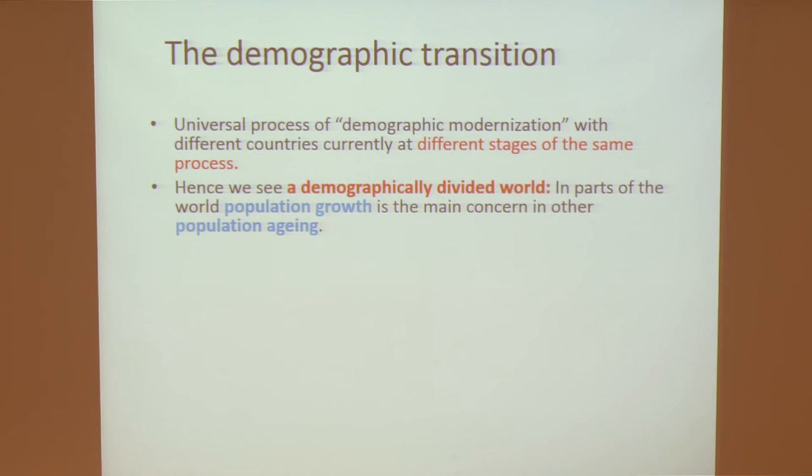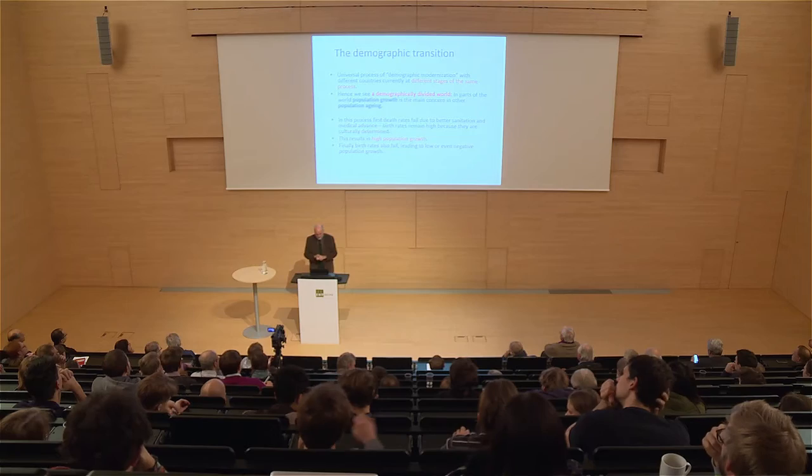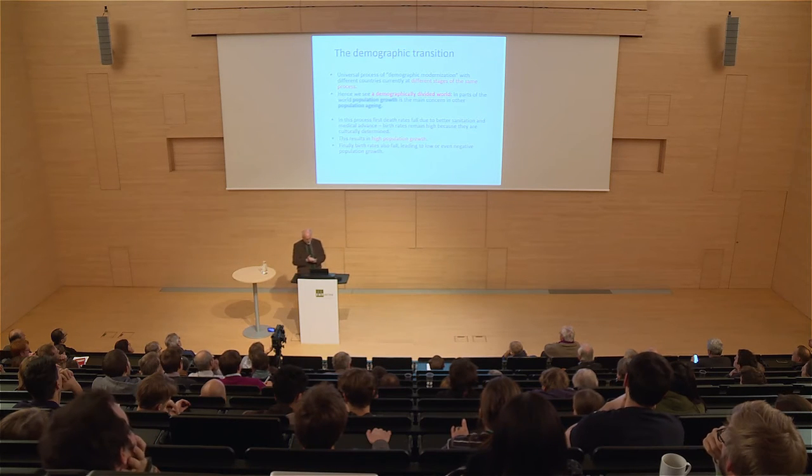This really confuses many commentators — in parts of the world, population growth is the main concern, particularly in Africa, whereas in others, particularly in Europe and East Asia, Japan being a good example, population aging is a big concern. Generally, it is first that the death rates fall. Why do they start to fall? Throughout human history there have been fluctuations in birth and death rates. On average, birth rates were about the same level as death rates, and this is the Malthusian model: if the population grows, after a while they run out of food supply, death rates catch up, and there's a Malthusian equilibrium.